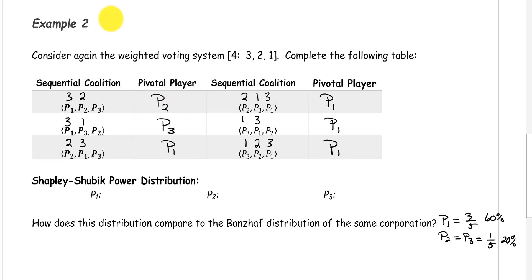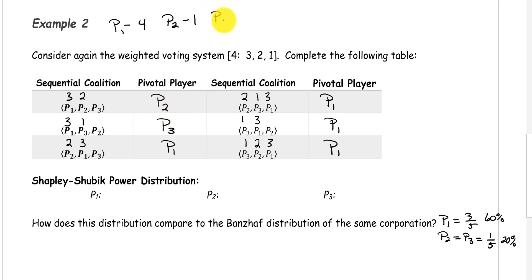Now we need to figure out how many times each player was pivotal. Player 1 was pivotal 4 times. Player 2 was only pivotal once. And player 3 was also only pivotal one time. We also need the total, and 4 plus 1 plus 1 is 6.